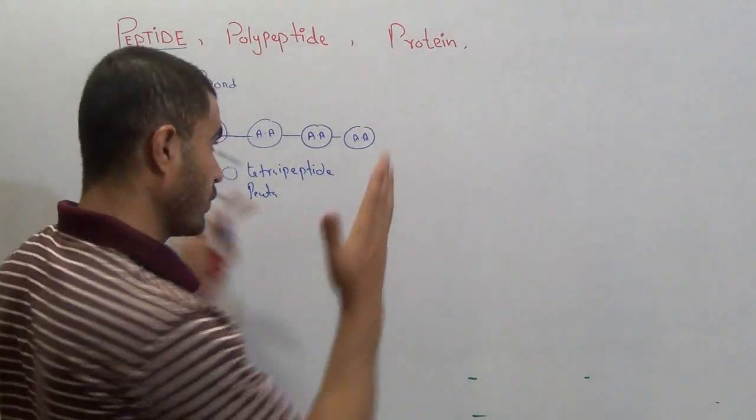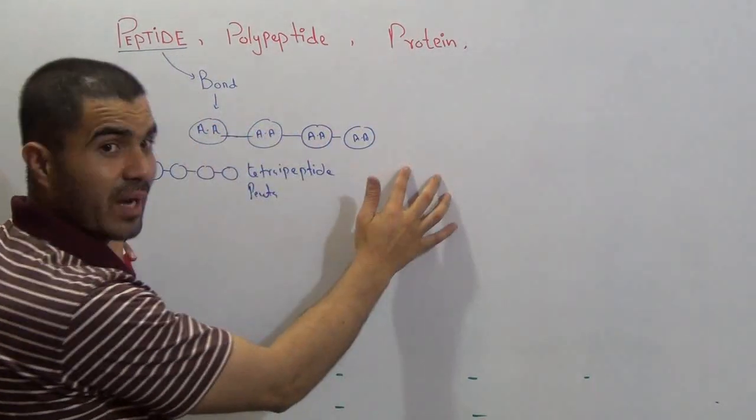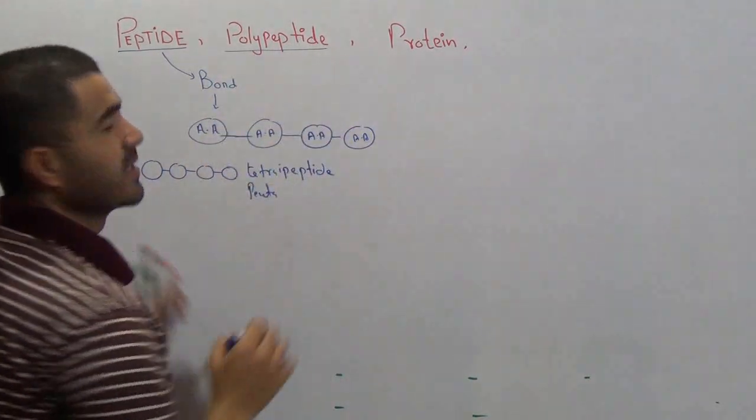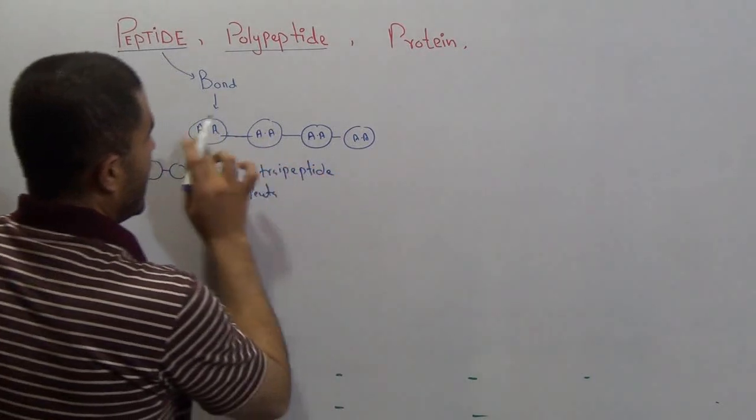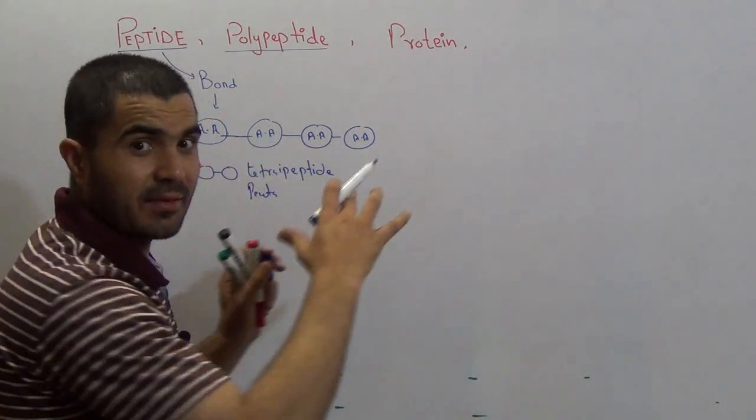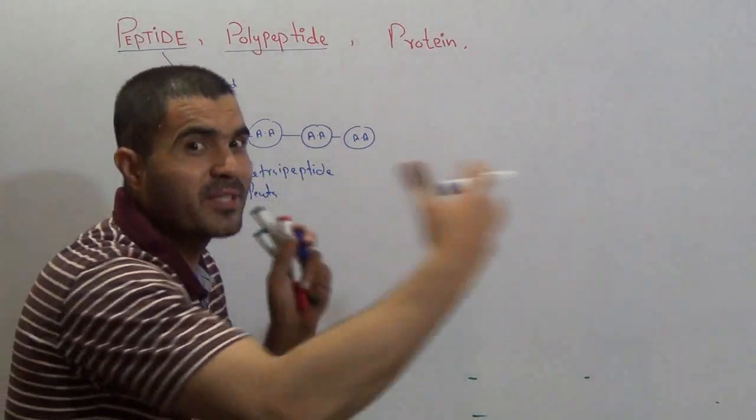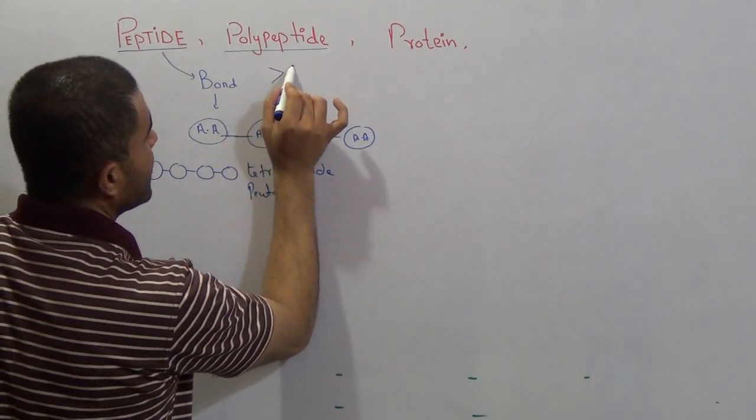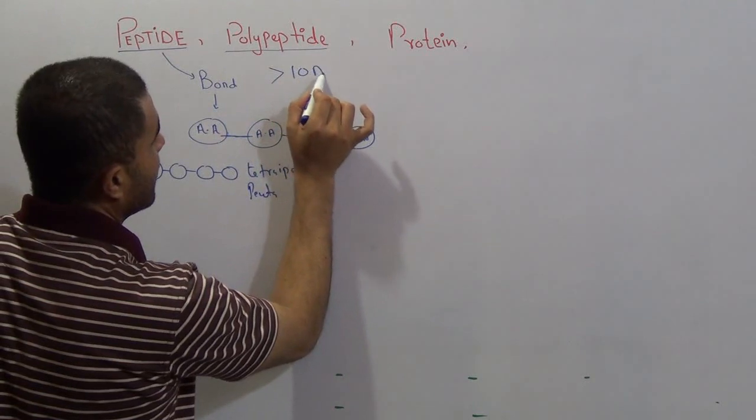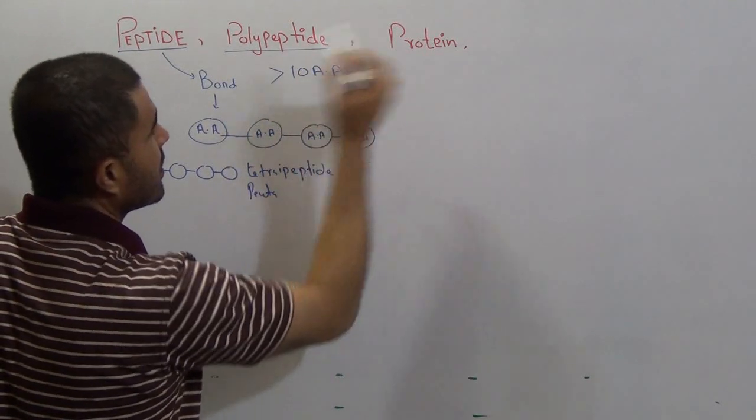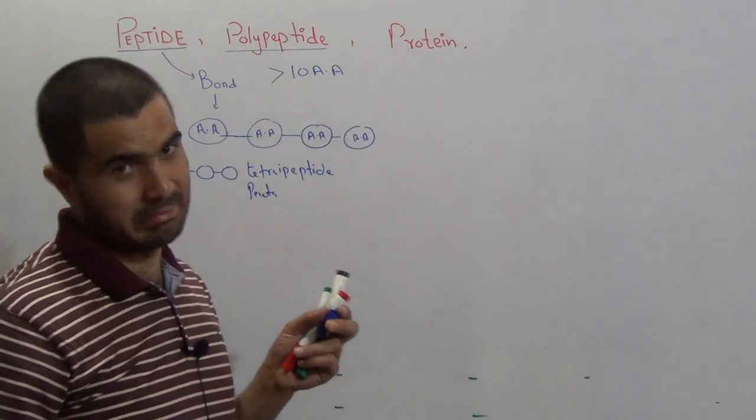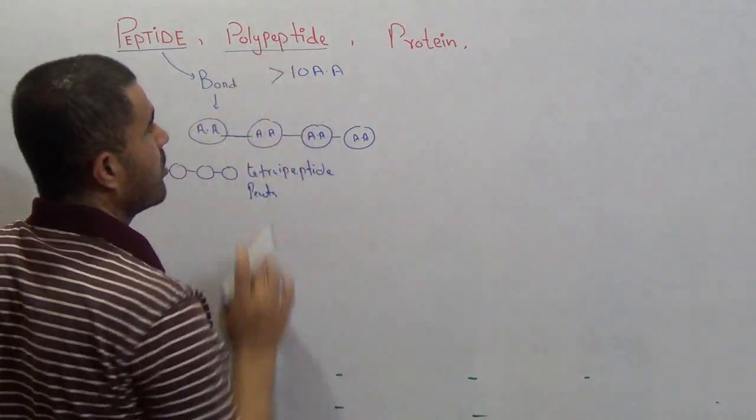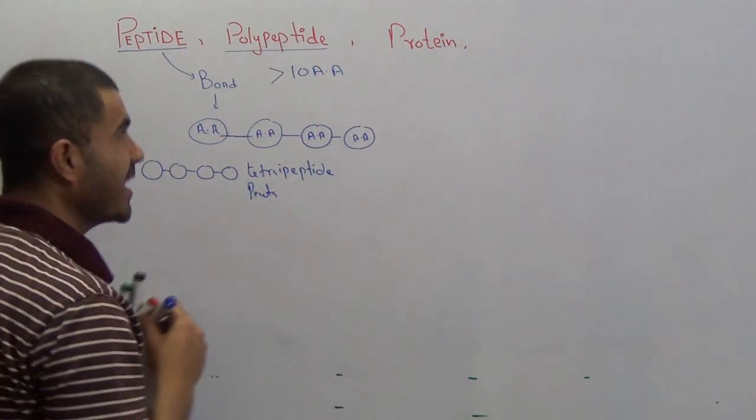Similarly you can go forward - penta for five amino acids, hexa, hepta, nine, and ten. After ten, a specific word will be used for the combination of the amino acids. That is called as a polypeptide. What is polypeptide? A polypeptide, in general, is a peptide which contains more than ten amino acids - more than ten, twelve, twenty, fourteen. That chain will be called as polypeptide.